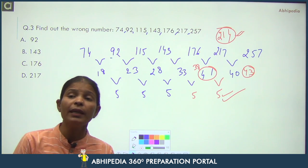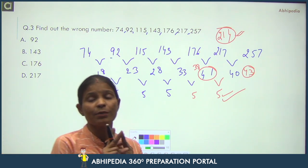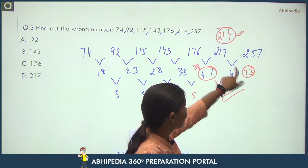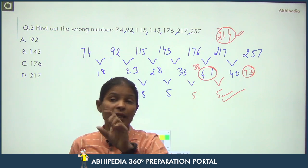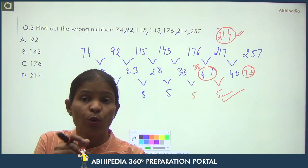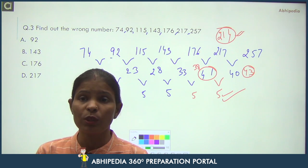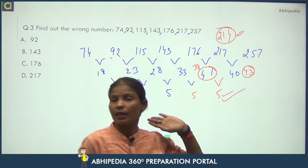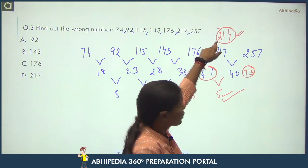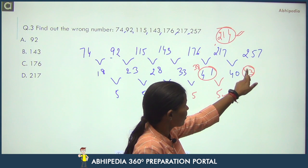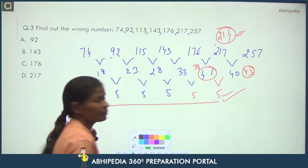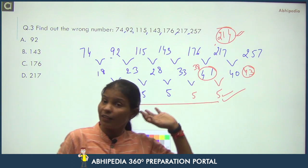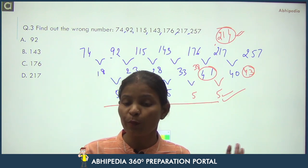One important point to remember: when the logic is found in differences, the series will appear wrong in two places. But when you make the correction — putting the correct number in place of the wrong one — the subsequent terms automatically become correct too. That's how you verify your answer.